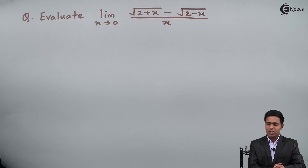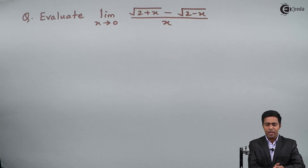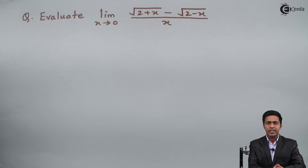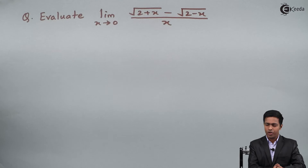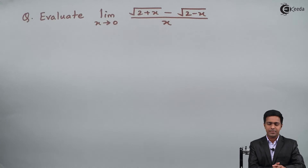Hello everyone. In this problem we have to evaluate the limit as x tends to 0 of square root of (2 plus x) minus square root of (2 minus x), all divided by x.